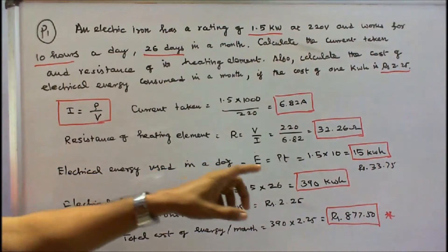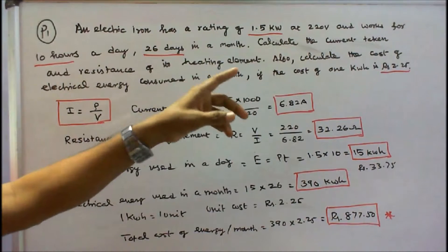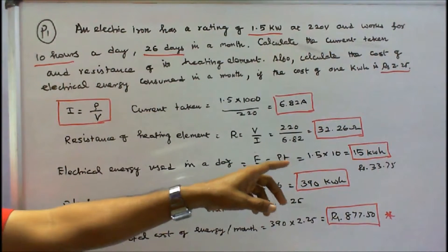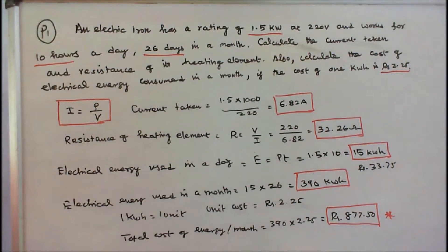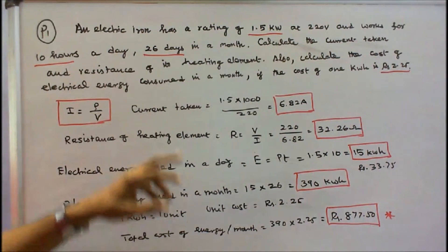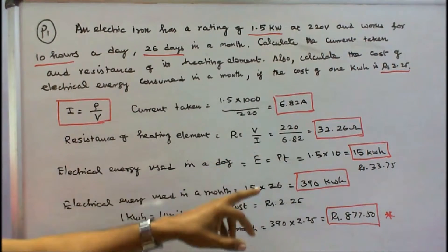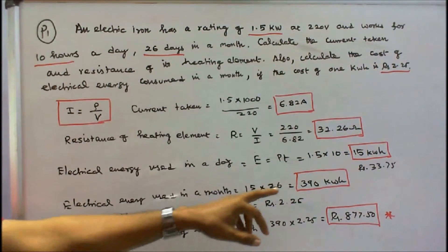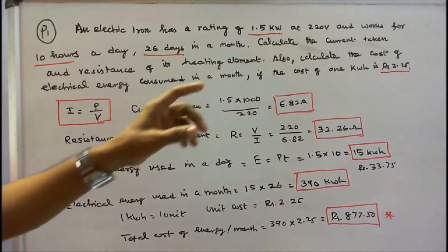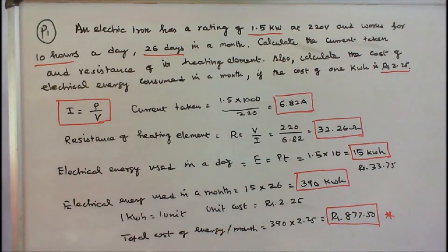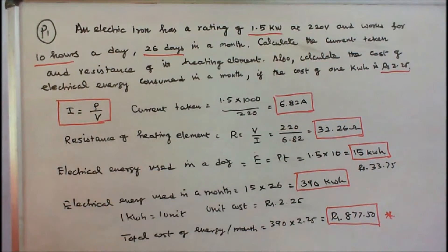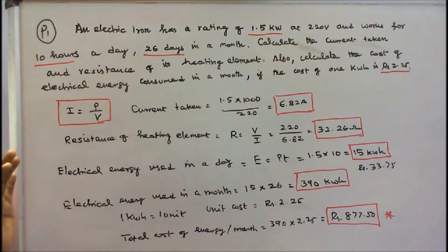So the daily cost is 15 into 2.25, that is equal to 33.75. Next is electrical energy used in a month over 26 days: 15 into 26 is equal to 390 kWh. The unit cost is 2.25, so 390 into 2.25 is equal to 877.50. The cost of electrical energy consumed in a month is Rs. 877.50.